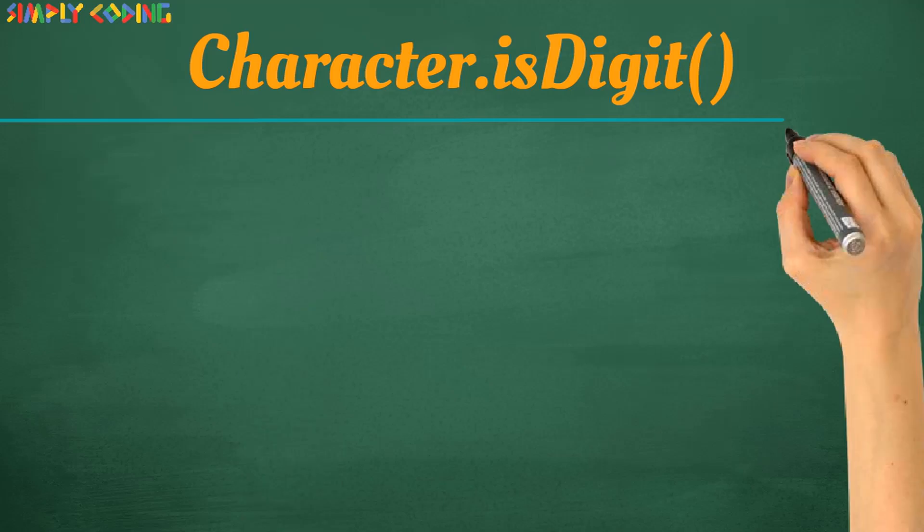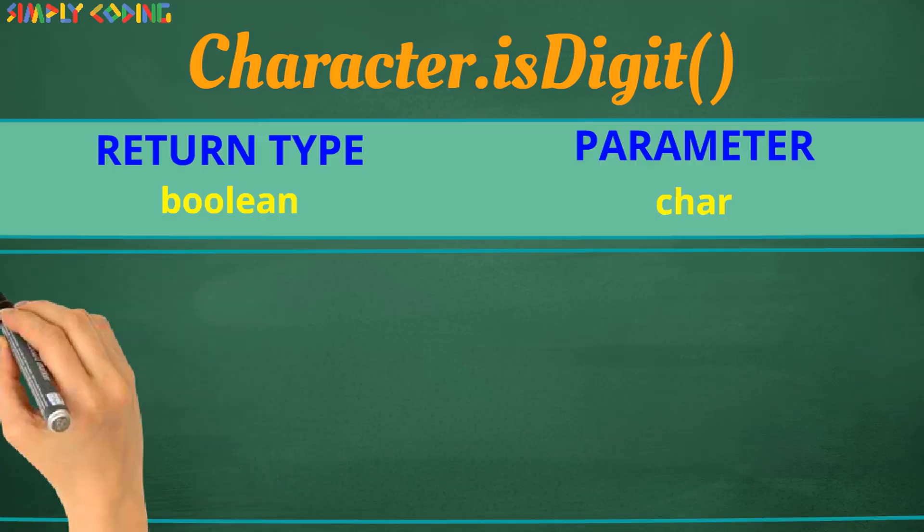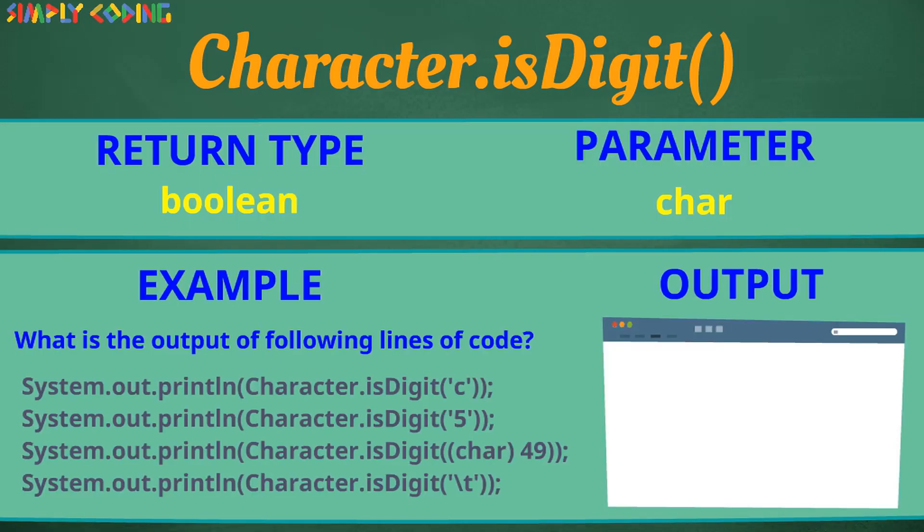Next is isDigit. It returns true if character passed is digit otherwise it returns false. Do check over here also we have used typecasted ASCII code for one. For answering these kind of questions you need to know the ASCII codes I shared earlier.